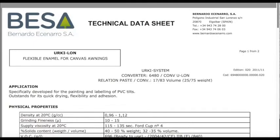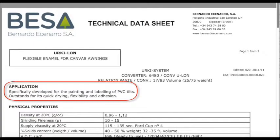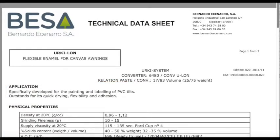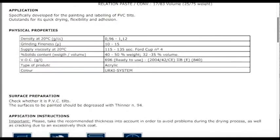For the purpose of this example, we're going to look at this particular product. It's a BESA Urkilon 6480. Quite a basic paint. Just below that in the first section, you'll see Application. This refers to how you apply the paint and what it goes on to. Here it's specifically developed for painting and labeling PVC tilts, outstanding for its quick-drying, flexibility and adhesion. This is what we would refer to as a 1K product. In this case, all you'll need to do is add thinners to this particular product.